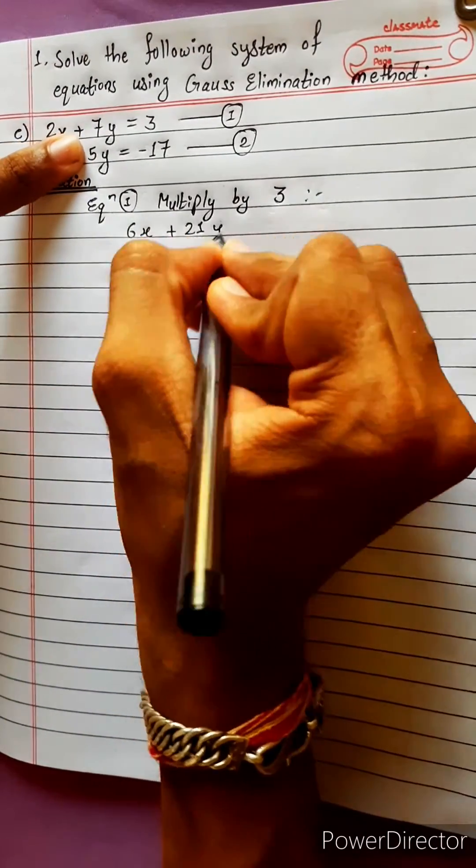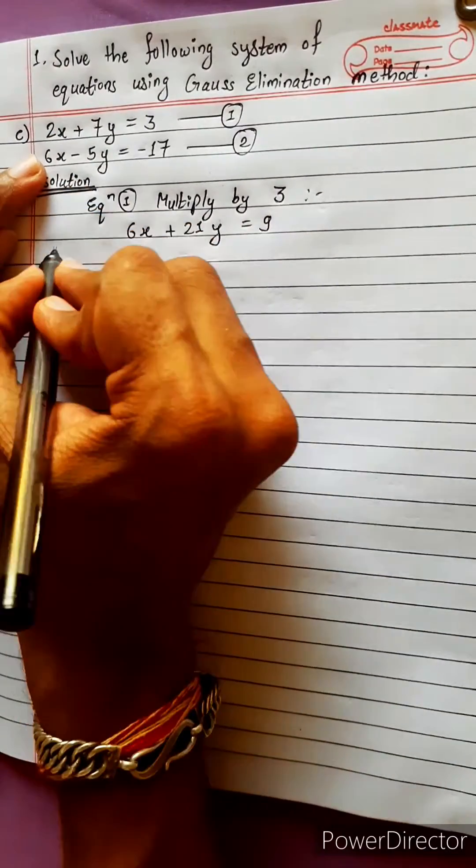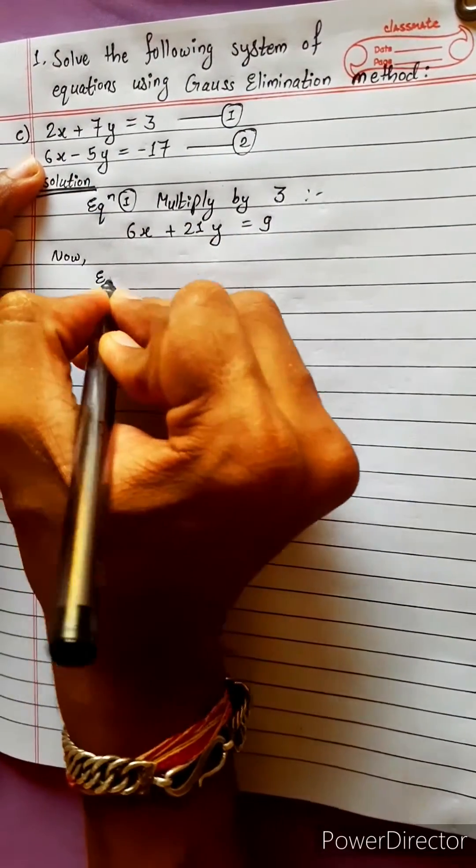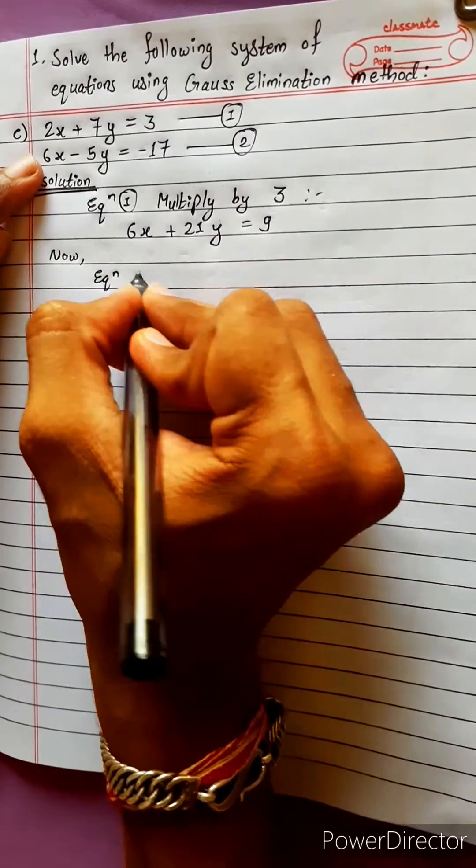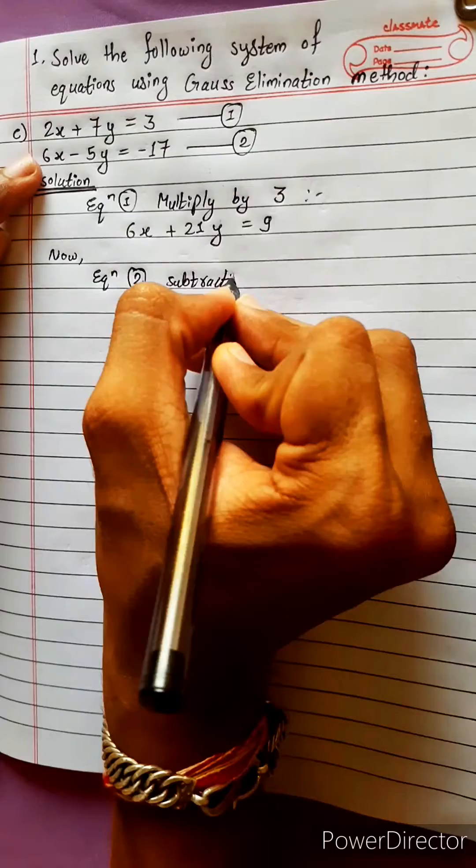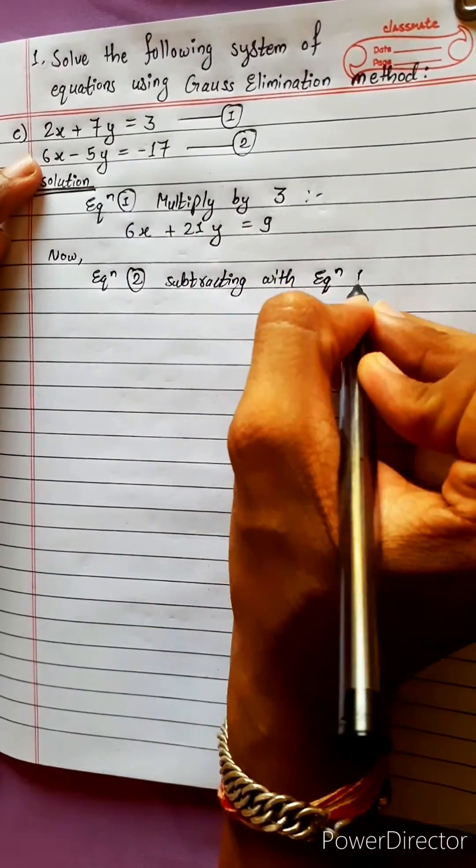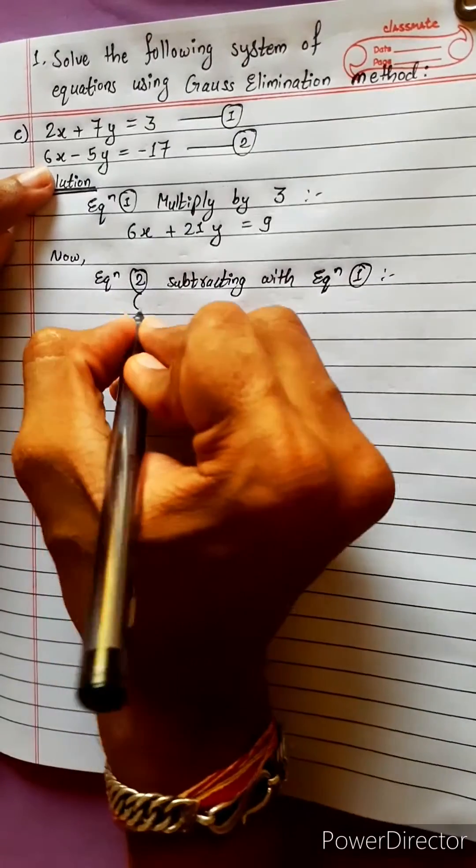Three times 9 equals 27. Now we have equation 2 subtracting with equation 1. Now we have 6x.